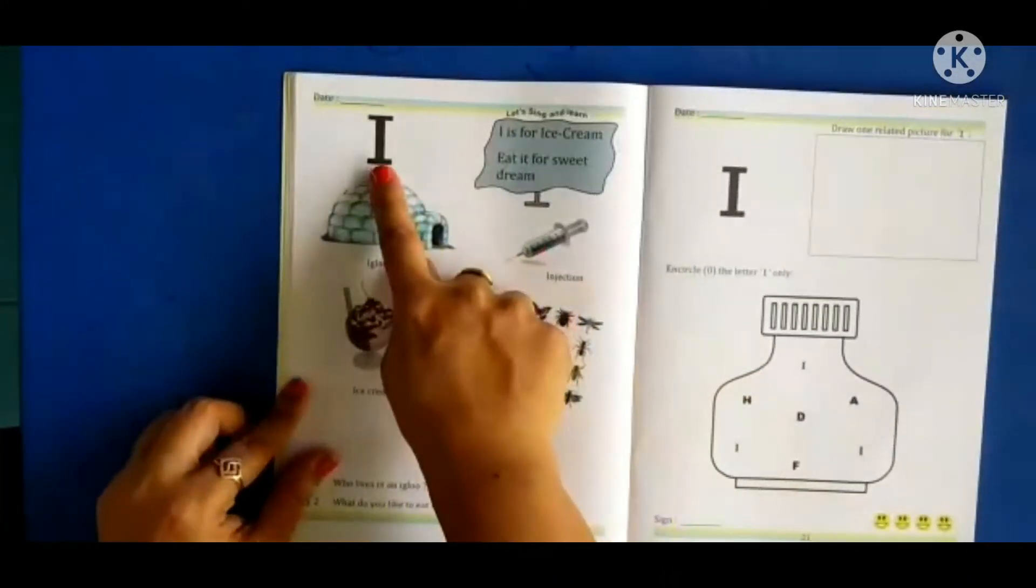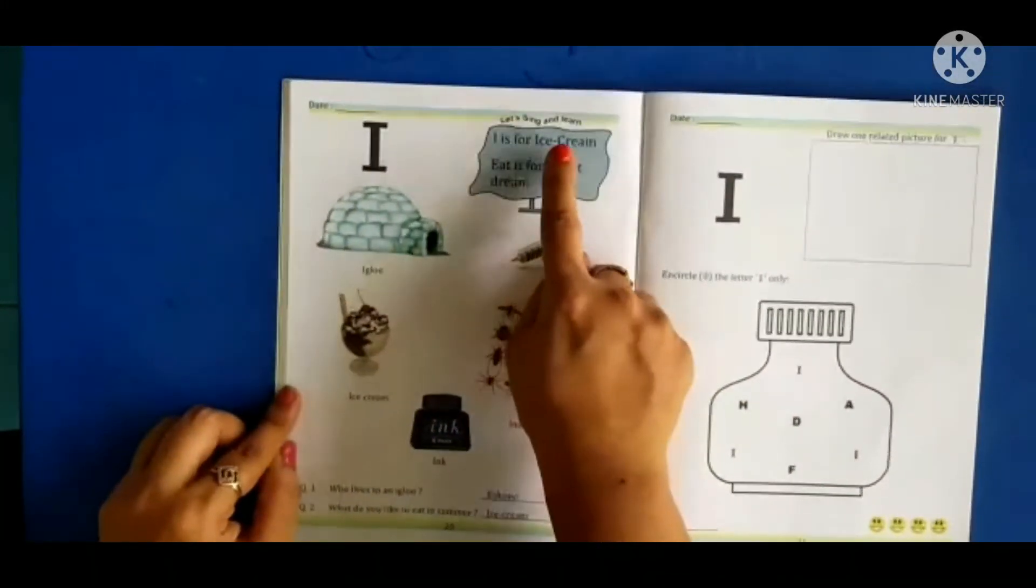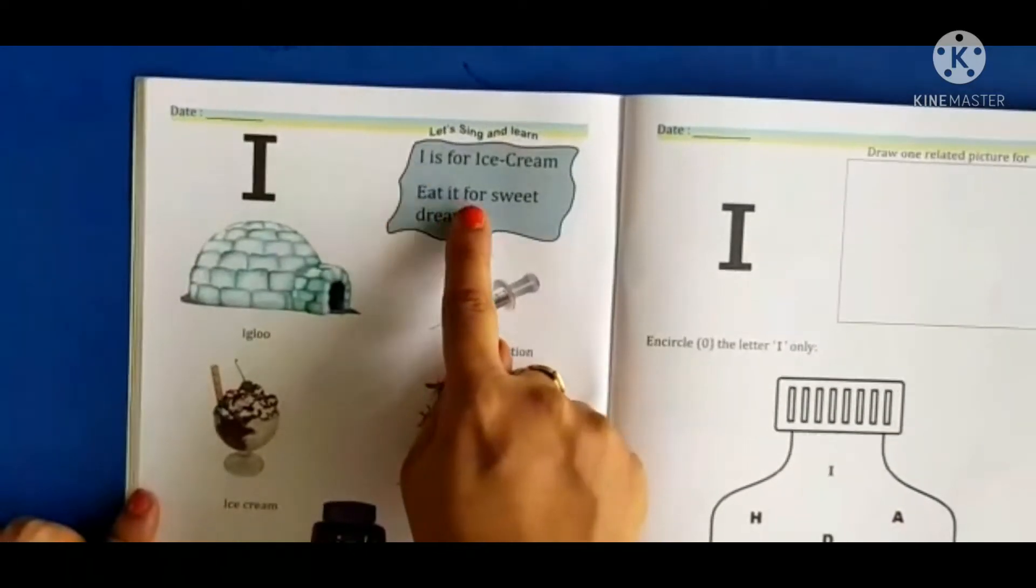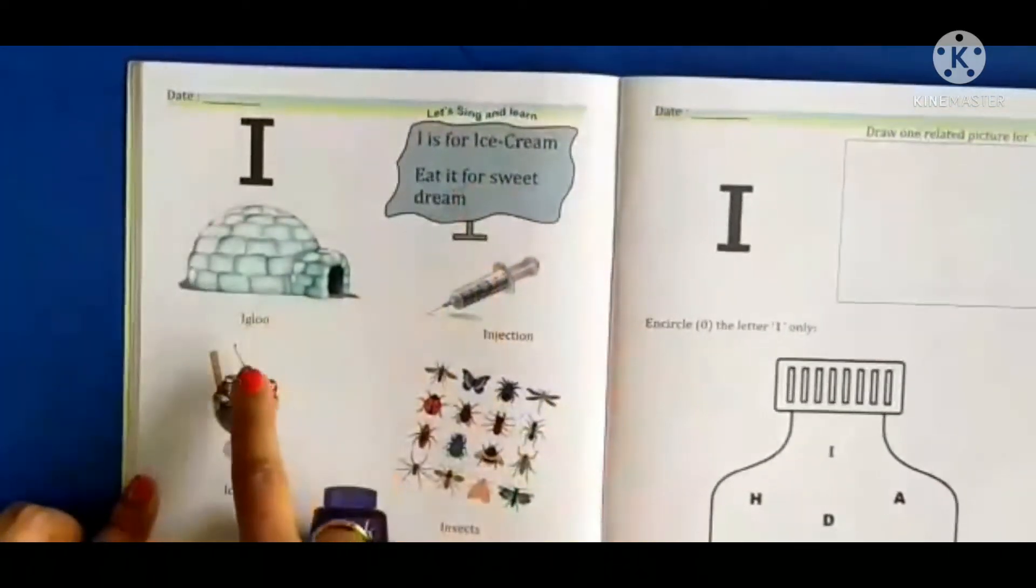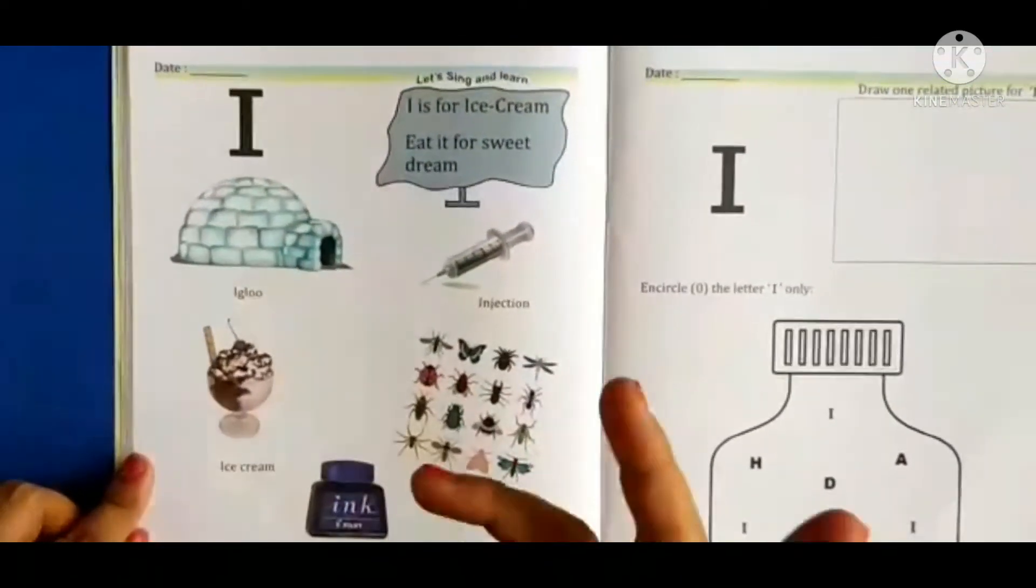Let's see. I is for ice cream. Eat it for sweet cream. Now let's see pictures related to letter I.